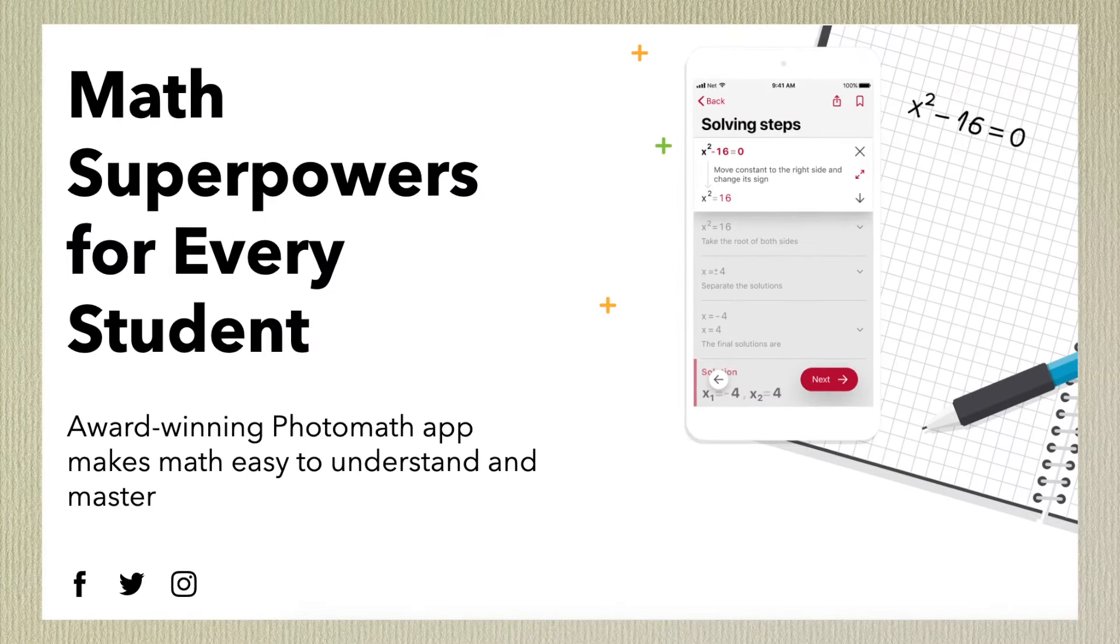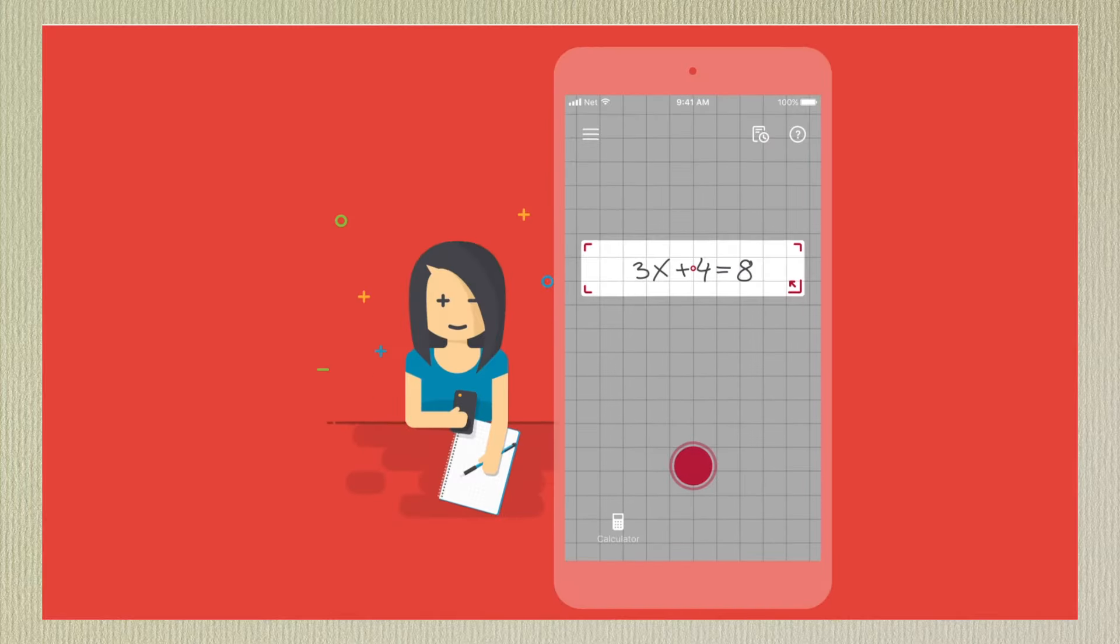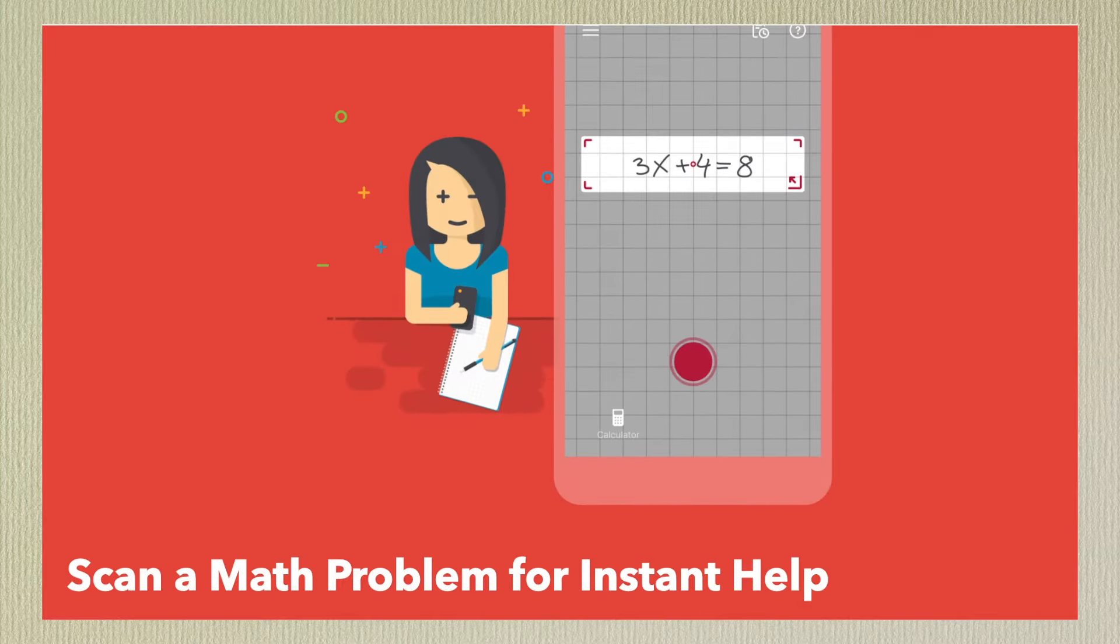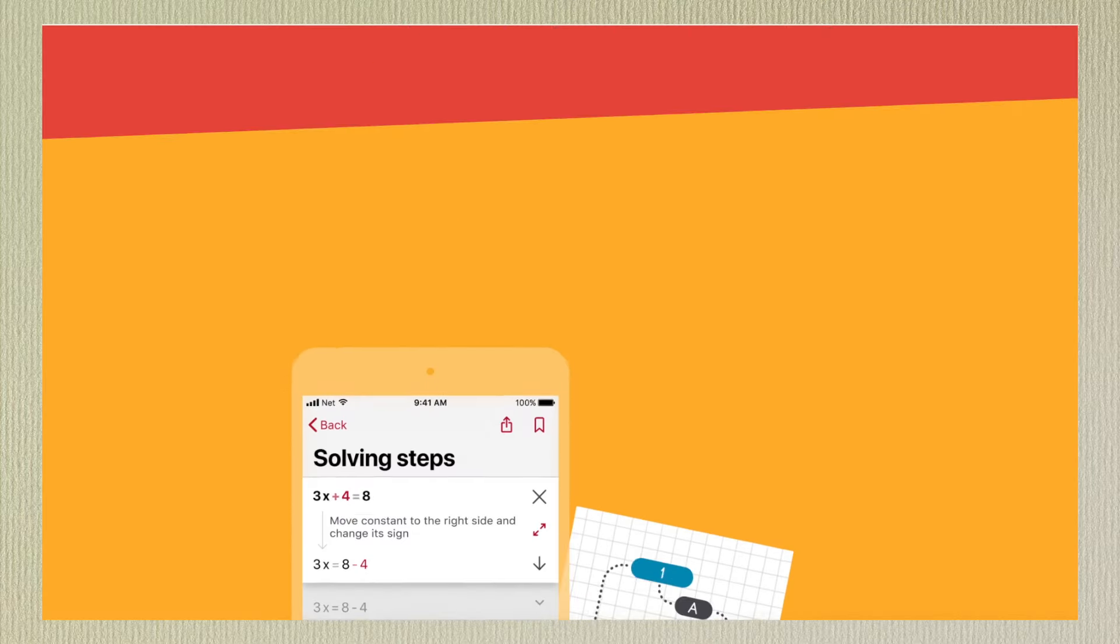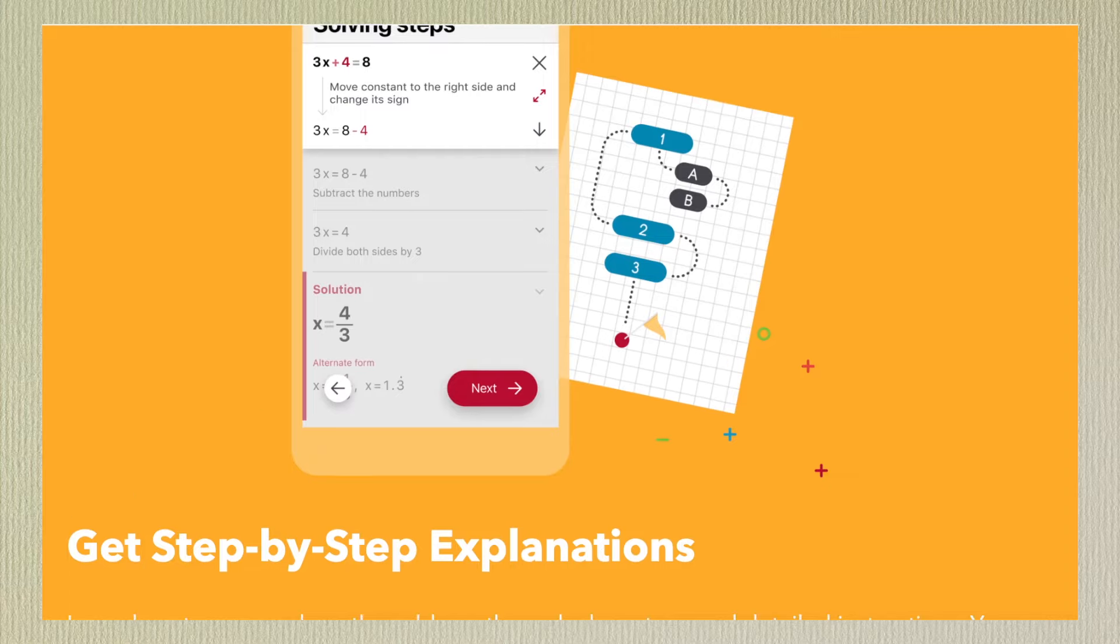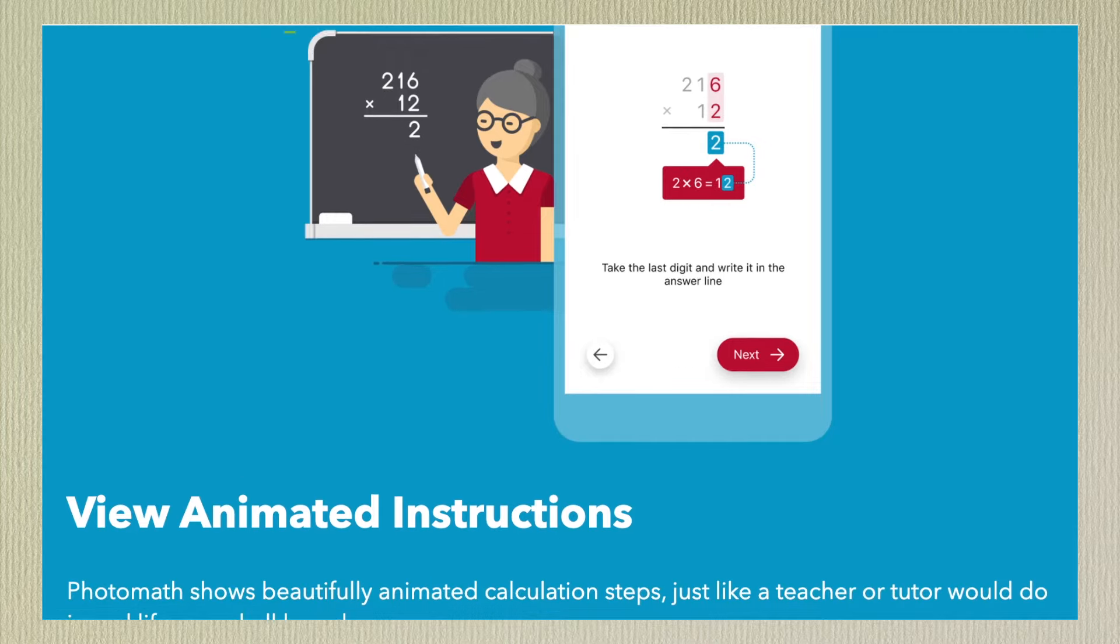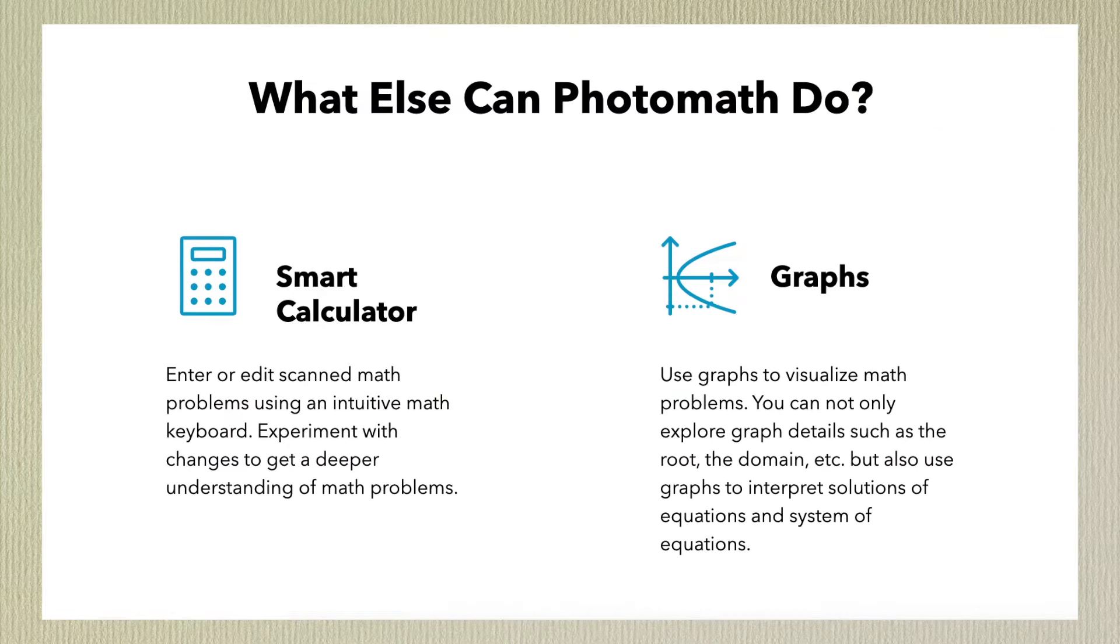Our second app is Photomath. This product is specifically geared towards scanning problems and solving them, so I have high hopes for this one. It has over 2 million reviews on Google Play. It's at a 4.7 rating and over 400,000 on Apple, and it's at a 4.8 rating. It's also a free download, but let's see if it makes us buy a premium product like Mathway. Let's get into it.